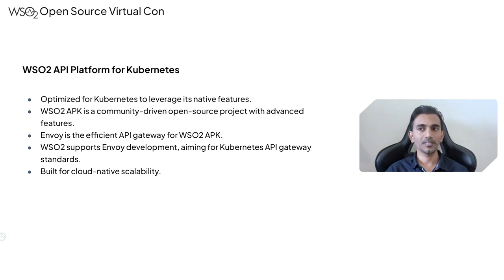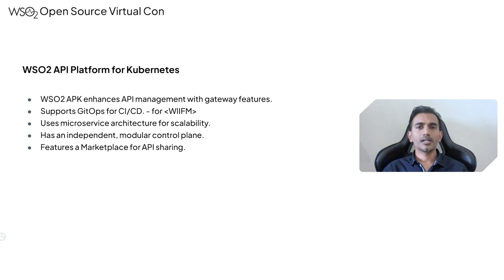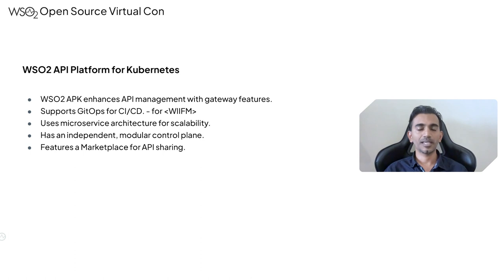APK is built for cloud-scale — not just for POC, but for complete cloud environments with real production traffic, supporting all scaling, resiliency, and other cloud-native aspects. WSO2 APK is not just a gateway; it also has a lot of management capabilities, CI/CD capabilities that enable users to manage artifacts across different environments automatically. When designing APK we followed microservices architecture, giving us independent scalability and deployment flexibility.